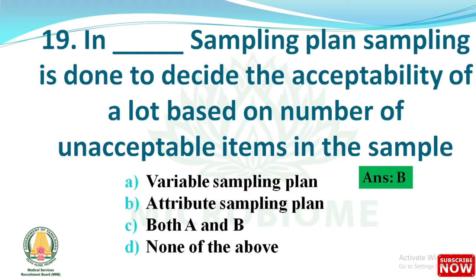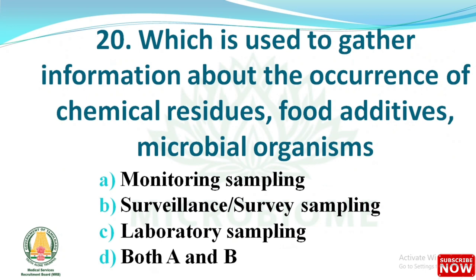Next question: which type of sampling is used to gather information about the occurrence of chemical residues in a sample? The options are monitoring sampling, surveillance or survey sampling, laboratory sampling, and both A and B. The right answer is option B: surveillance or survey sampling.